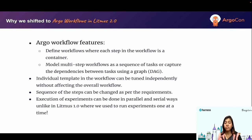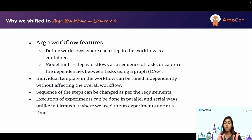I'd like to talk about why we shifted to Argo workflows in Litmus 2.0. In Litmus 1.2, the chaos injection was done by simply applying Litmus CRDs — such as the chaos experiment manifest — via kubectl apply. There was no proper visualization, and chaos injection was done only one experiment at a time.